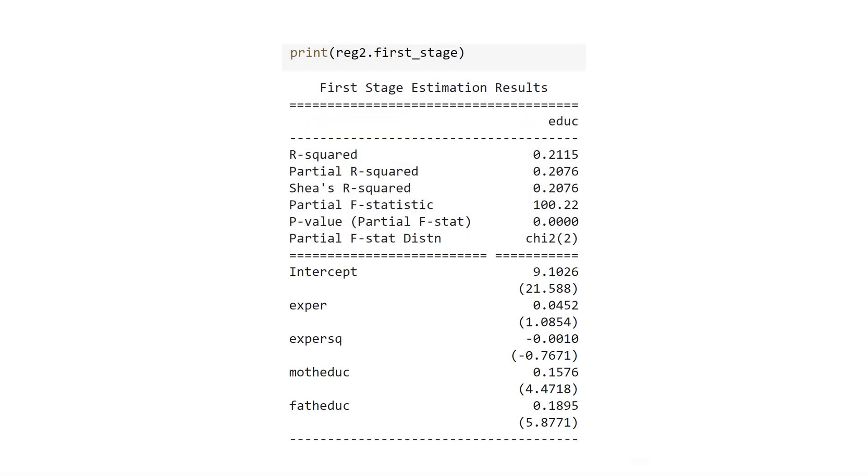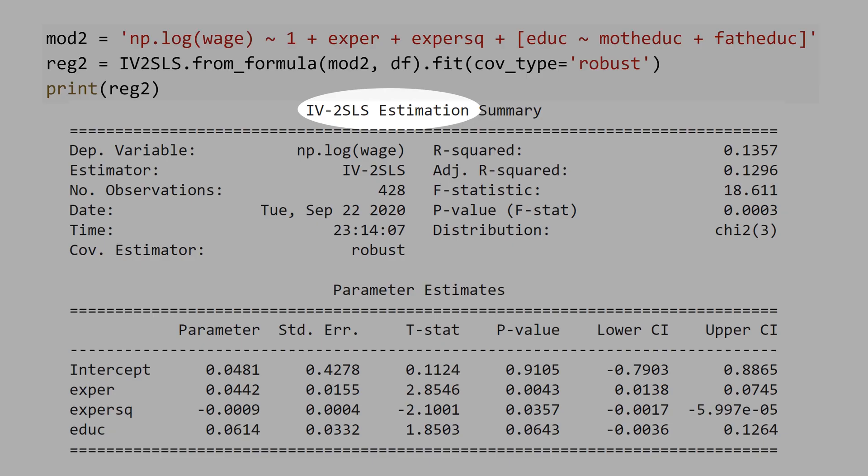Let's return to the previous table that is the second stage. Remember the title, IV two-step least square? This is the second stage of the two-step least square.